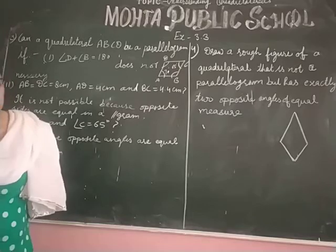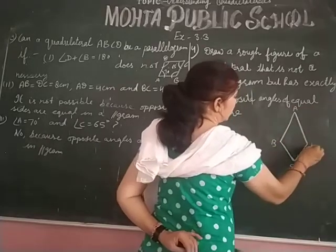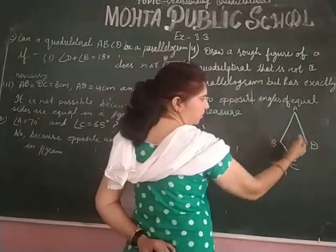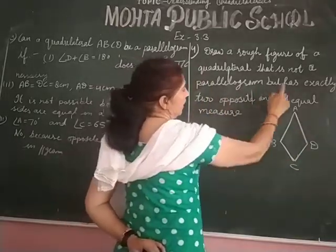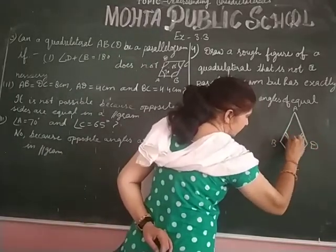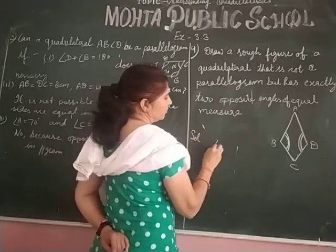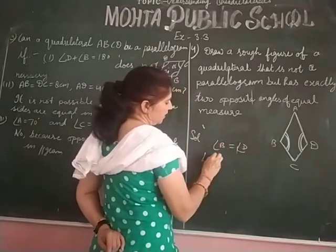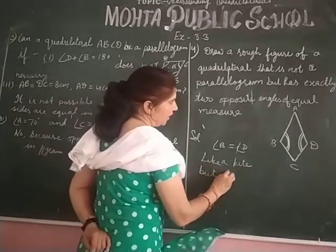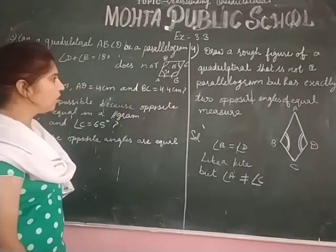In this figure, ABCD is drawn. That figure is not a parallelogram — opposite sides are not equal, but it has exactly two opposite angles of equal measure, like angle B equal to angle D, similar to a kite. But angle A cannot equal angle C. Therefore, we can say it is not a parallelogram.